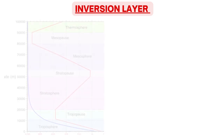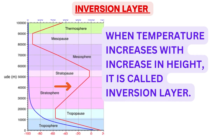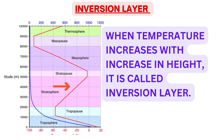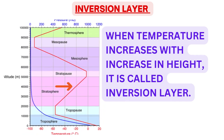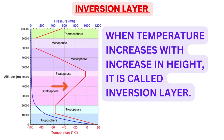When the temperature increases with increase in height, it is called an inversion layer. Isothermal and inversion layers are associated with stability in the atmosphere, and this will be discussed separately in the next video.